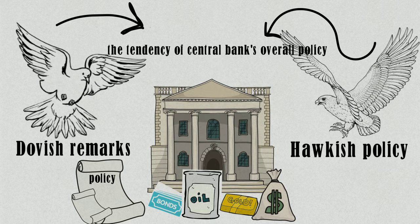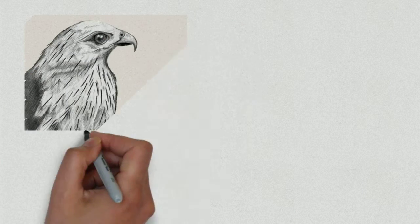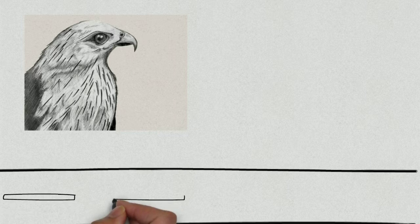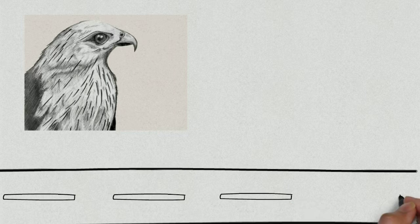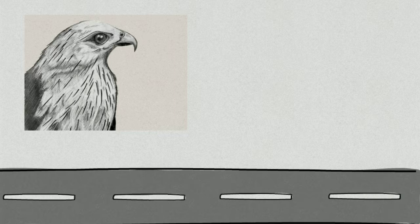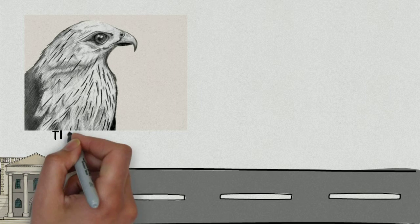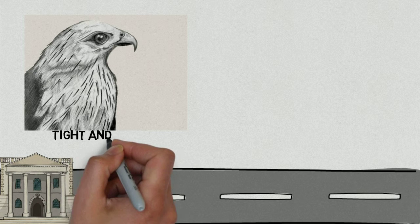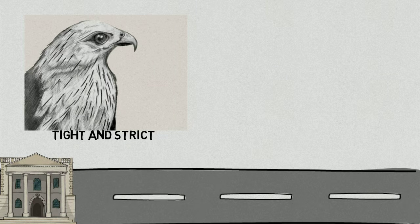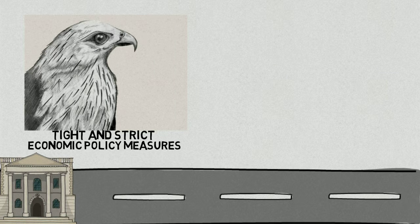So let's start by asking: what is a hawk? When we mention a hawk, we immediately imagine a sharp eye, and a predatory and unsympathetic nature. Therefore, a hawkish central bank or government implies that the direction of the overall policy is towards tight and strict economic policy measures.